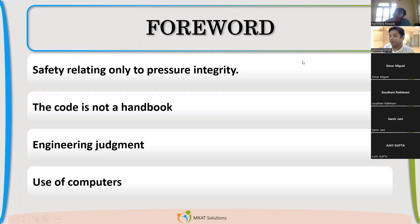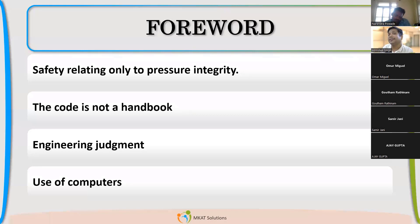Try to read the forward again and see if you have other takeaways. Seismic loads — very right. Safety valve calculations — really good. So read the forward again apart from these points. I'm sure you will be able to take out something more useful from the forward. Just try to read it again and complete this list.